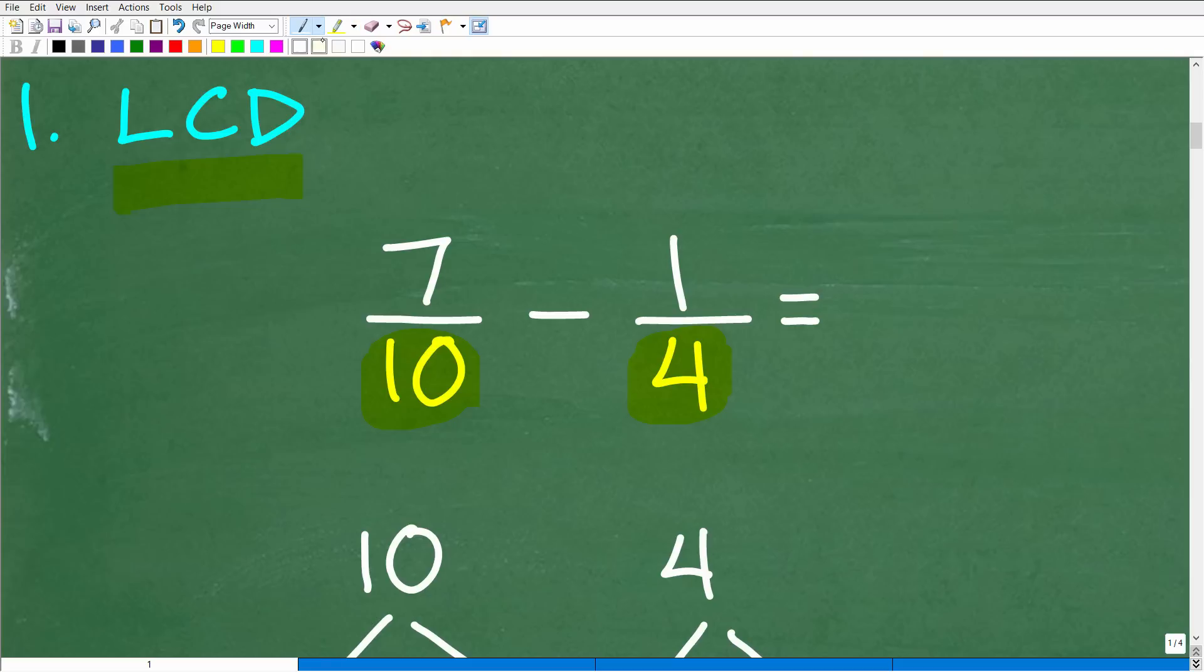Anytime we're trying to add or subtract fractions, we need these bottom numbers the same. But let me back up a step further. What is the top number in a fraction? That's called the numerator, and the bottom number is called the denominator.